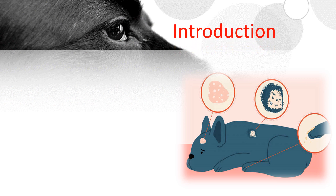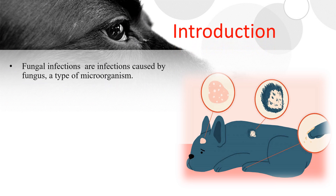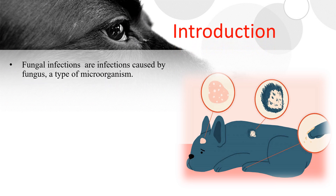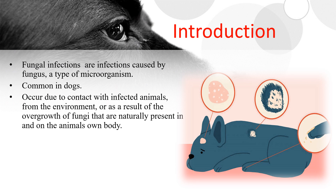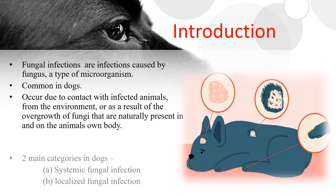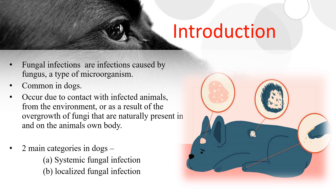A short briefing of fungal infection. Fungal infections are infections caused by fungus, a type of microorganism. It is common in dogs. It occurs due to contact with infected animals from the environment, or as a result of the overgrowth of fungi that are naturally present in and on the animal's own body. Two main categories of fungal infections have been diagnosed in dogs: systemic fungal infection and localized fungal infection.